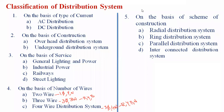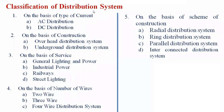The distribution system is classified based on five parameters. First, type of current — AC distribution and DC distribution. Second, basis of construction — overhead system and underground cables. Third, basis of service — general lighting and power for domestic and irrigation purpose, industrial applications, electric locomotive, and street lights. Fourth, basis of number of wires — two-wire (single-phase), three-phase three-wire, and three-phase four-wire system. Fifth, basis of scheme of connection — radial, ring, parallel, and interconnected distribution systems.